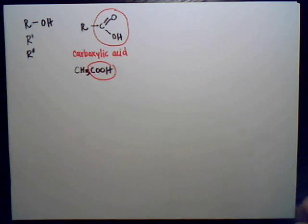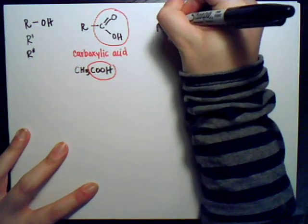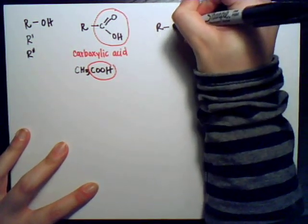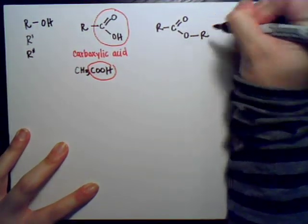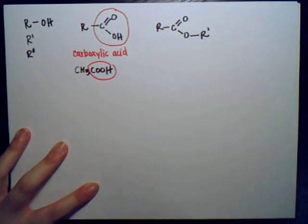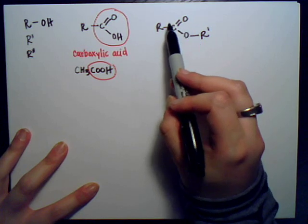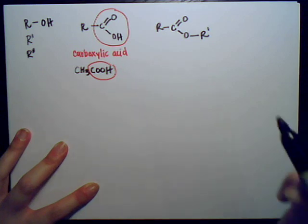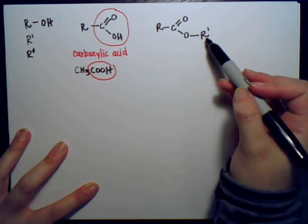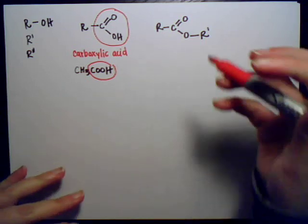Some other substituents we might have are esters. Esters have a C double bond O, and then another O connected to an R group, and then another R group on the other side. If it's two different R groups, you can represent it by R prime. This is called an ester.